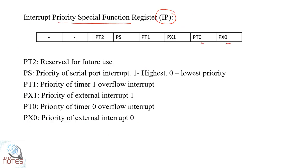The IP register bits are: PX0, PT0, PX1, PT1, PS, and PT2. PT2 is reserved for higher values. We are looking at the bit positions. The alternatives are PX0, PX1, and PT1 for interrupt priority assignment.